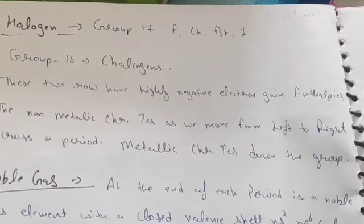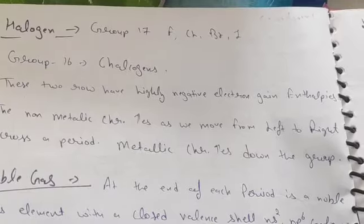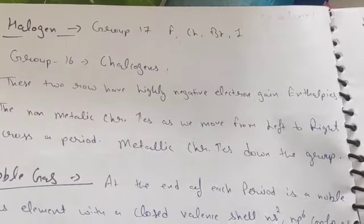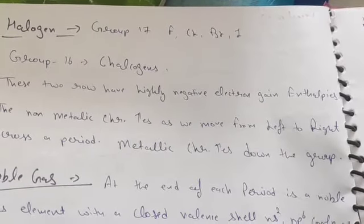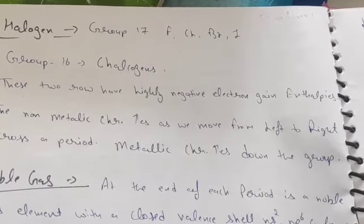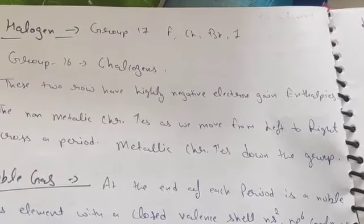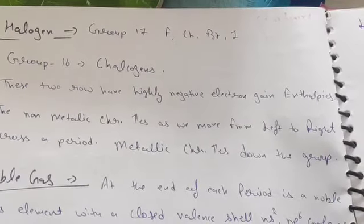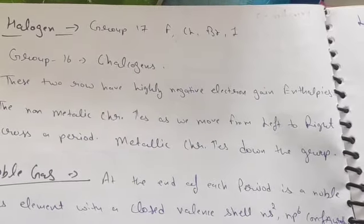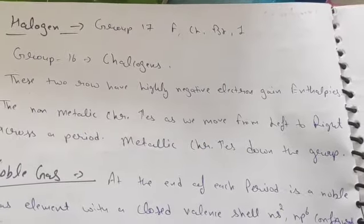The non-metallic character increases as we move from left to right across a period. Metallic character increases down the group. You will learn more about this as we proceed. This is just the introduction.